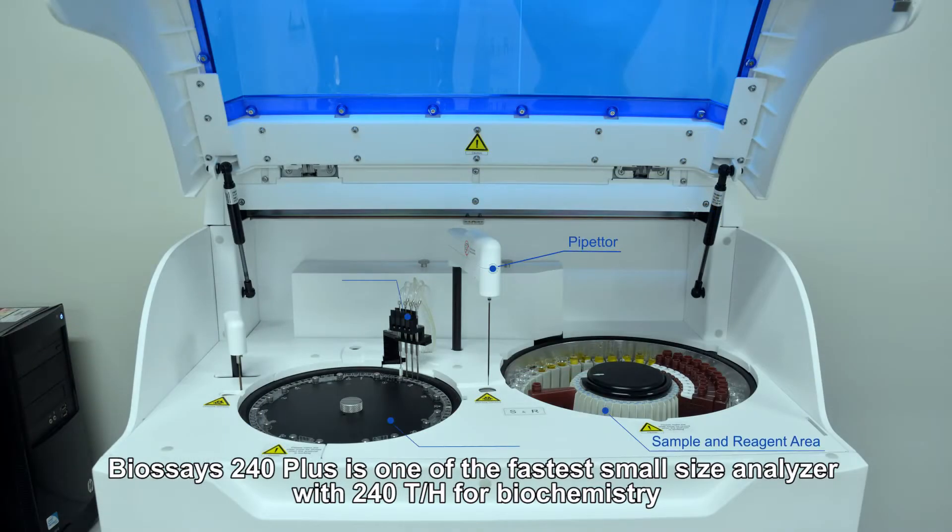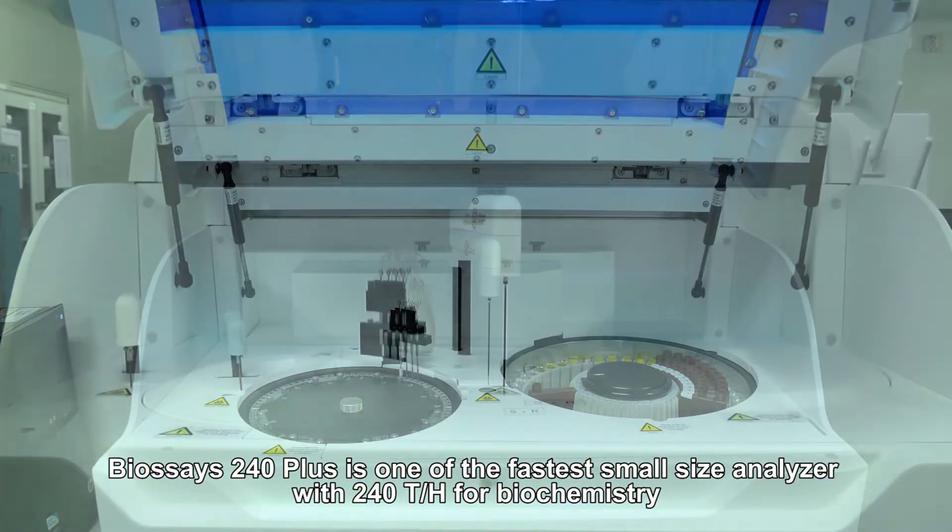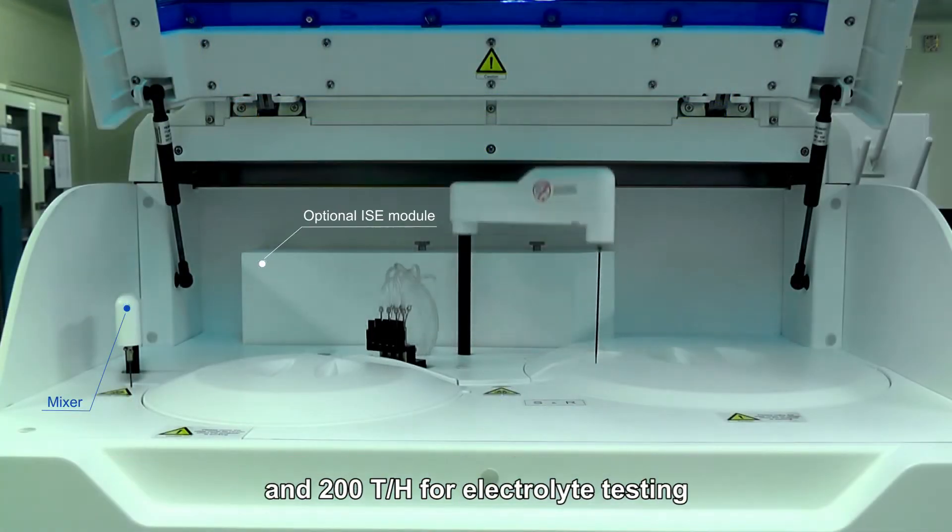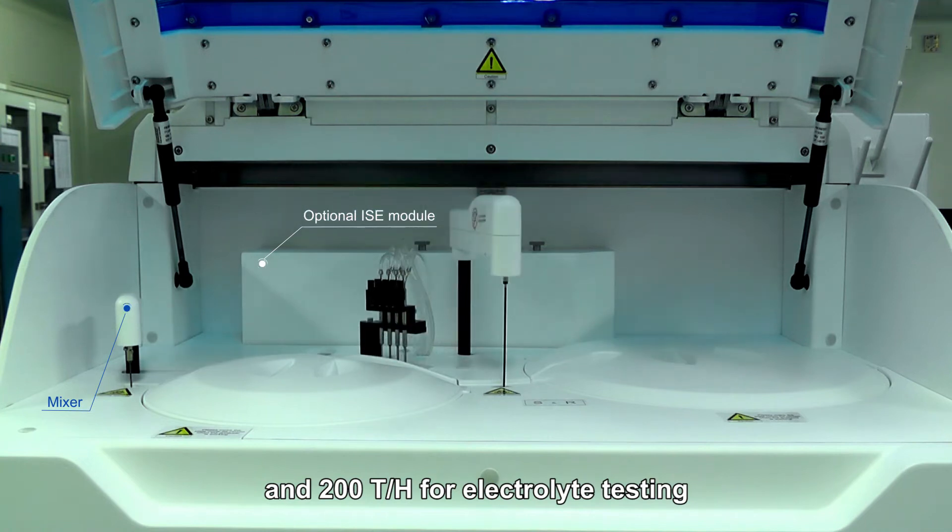BioSage 240 Plus is one of the fastest small size analyzer with 240 tests per hour for biochemistry and 200 tests per hour for electrolyte testing.